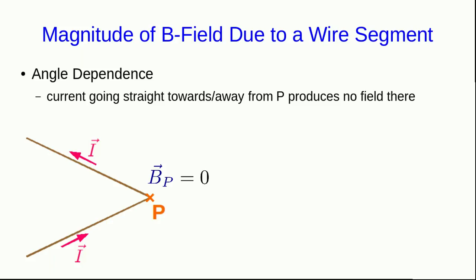Since we're going to think of any wire as just a bunch of wire segments, what we need to know is the B field due to a single short wire segment. And I'm going to start with the angle dependence because it shows us how we can isolate a single segment of wire and just look at the B field due to it.